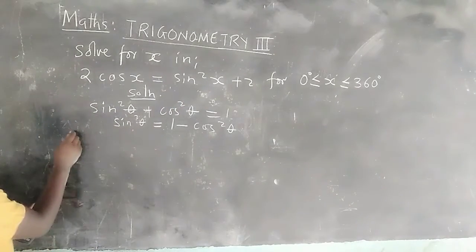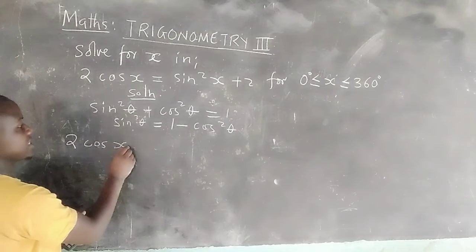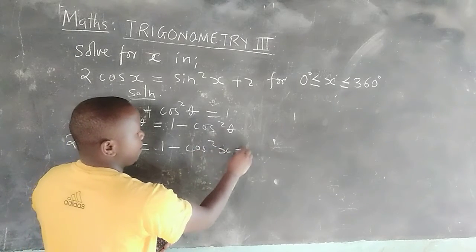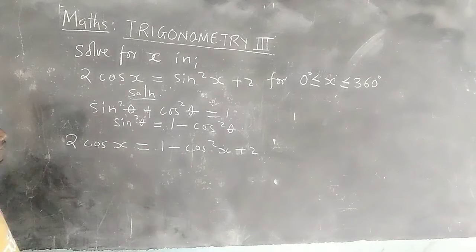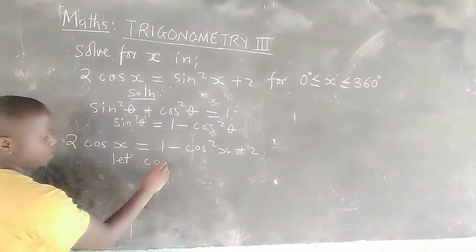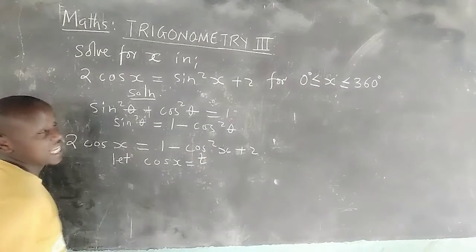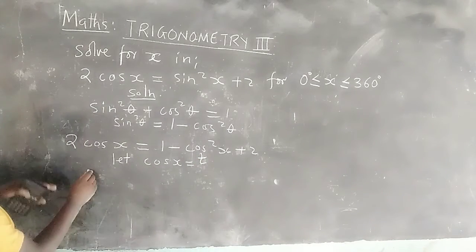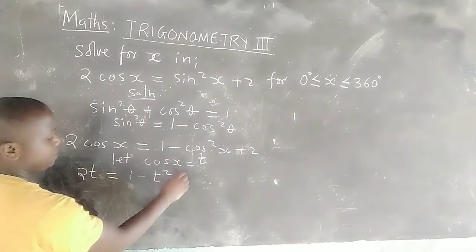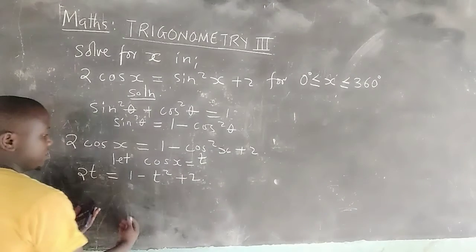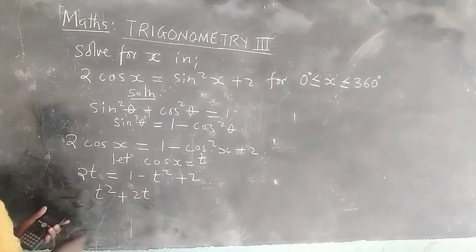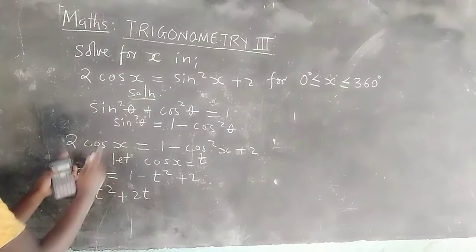Therefore, we rewrite the whole expression as: 2·cos(x) = 1 − cos²(x) + 2. We now let cos(x) equal t, a substitution variable. With t, the equation becomes: 2t = 1 − t² + 2. We rearrange this equation to get: t² + 2t on one side.